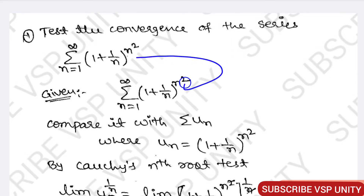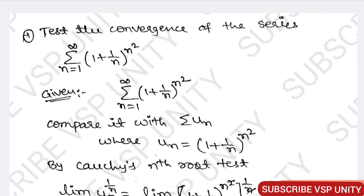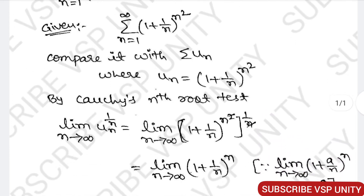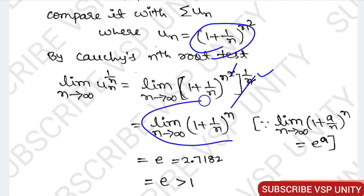If we compare this with the sum of u_n, then in place of u_n we have (1 + 1/n) to the power of n squared. By Cauchy's root test, the limit as n tends to infinity of u_n to the power of 1/n: if we take the 1/n power, here n and n cancel, and the remaining term will be limit as n tends to infinity of (1 + 1/n) to the power of n.